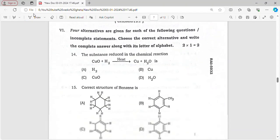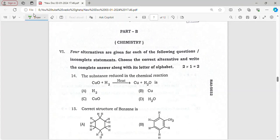Which substance is reduced in this chemical reaction? First of all, oxidation is gaining of oxygen and reduction is loss of oxygen. Who is losing oxygen here? Copper oxide CuO is getting reduced.